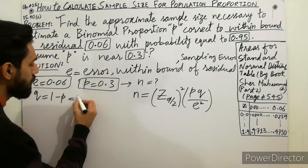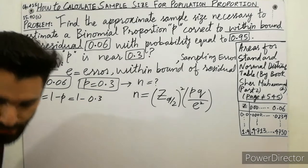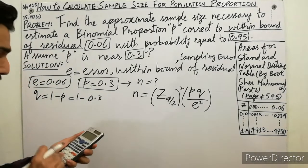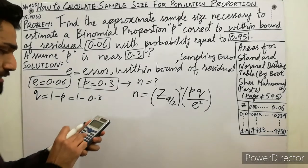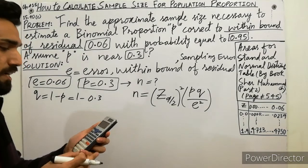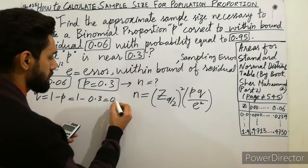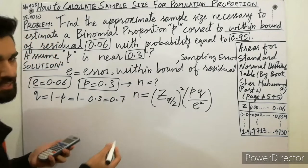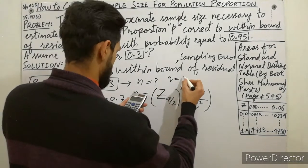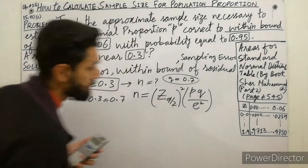Calculate Q: Q is equal to 1 minus 0.3, which gives 0.7. So Q is equal to 0.7. E is already given as 0.06. Now you have to calculate z alpha by 2.